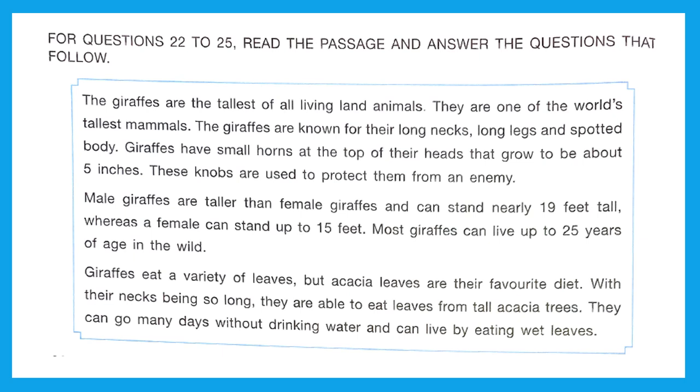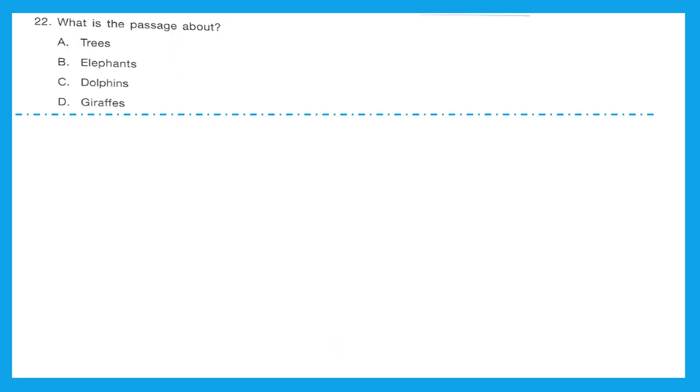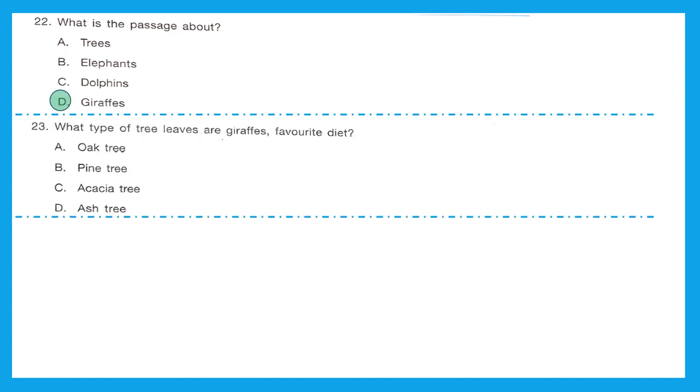Now let's solve the questions. Question 22, what is the passage about? This passage was about giraffes. Option D is the right answer. Question 23, what type of tree leaves are giraffe's favorite diet? It is acacia. Option C is the right answer.